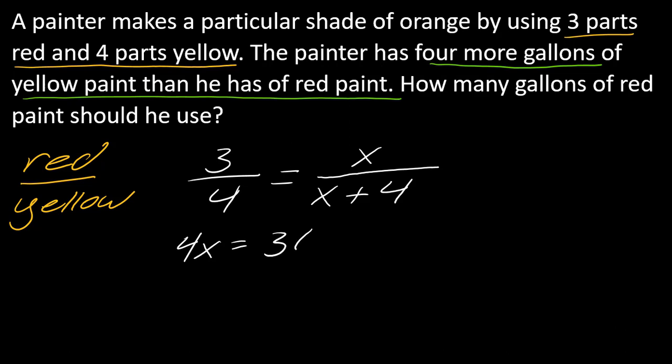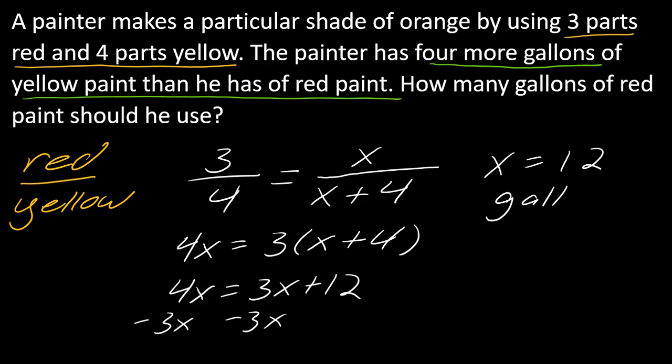It's going to be 4X equals 3 times all of X plus 4. You have to distribute, so this is 4X equals 3X plus 12. If I subtract 3X to the other side, I get X equals 12. This would be 12 gallons of red paint.